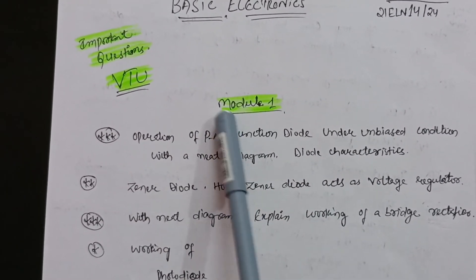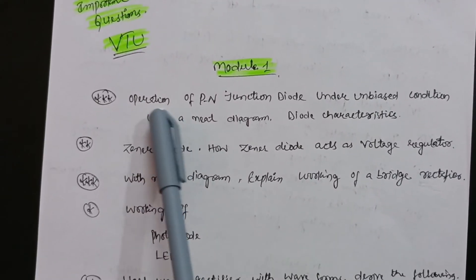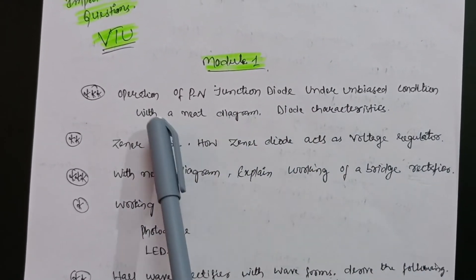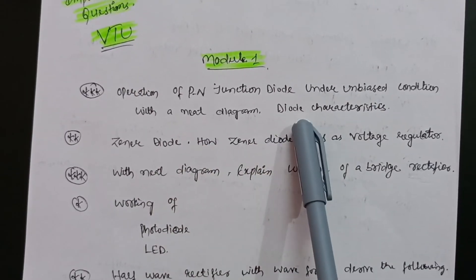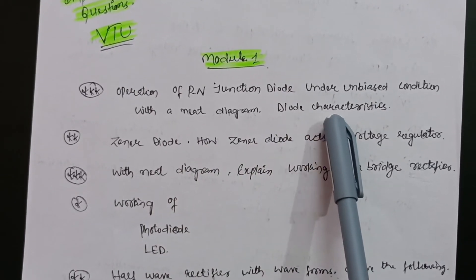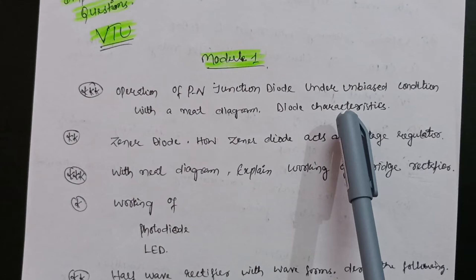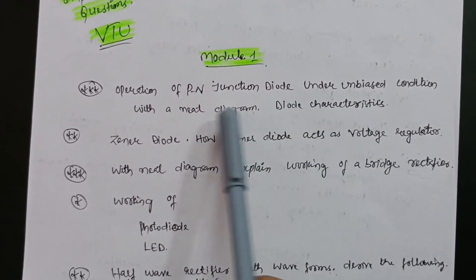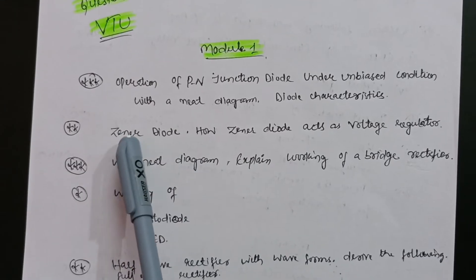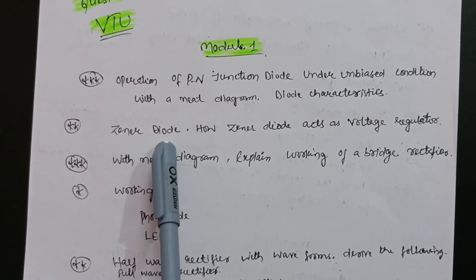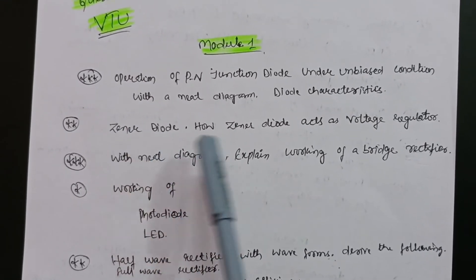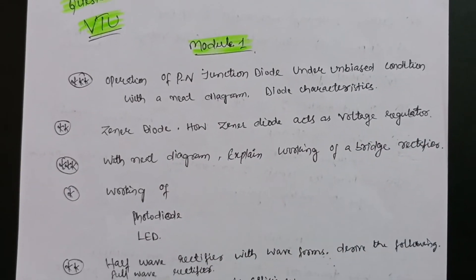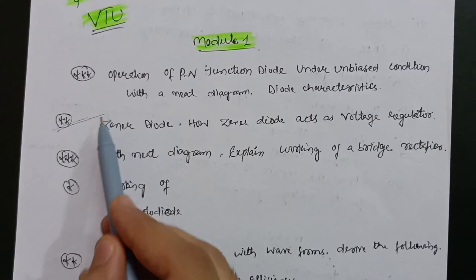In Module 1, go through the operation of a PN junction diode under biased and unbiased conditions with a neat diagram, and also the diode characteristics. You may already be aware of the PN junction diode from 12th class. The most important question is the Zener diode — define it and explain how it acts as a voltage regulator.